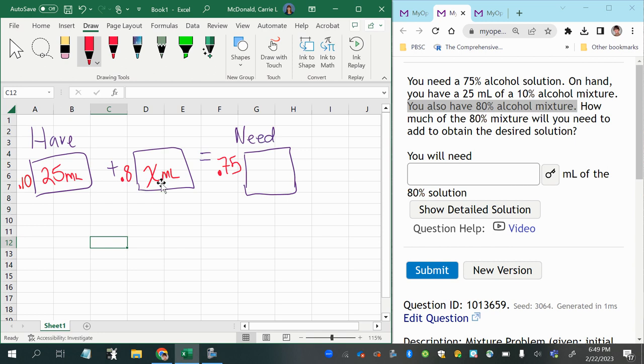But what we do know is that the number of milliliters of the 10% solution combined with the unknown milliliters of the 80% solution will combine to give me 25 plus x milliliters. Right, so that's how you want to set it up.